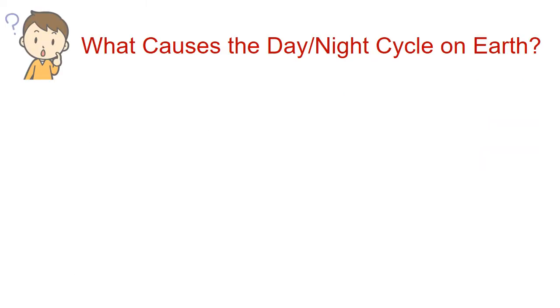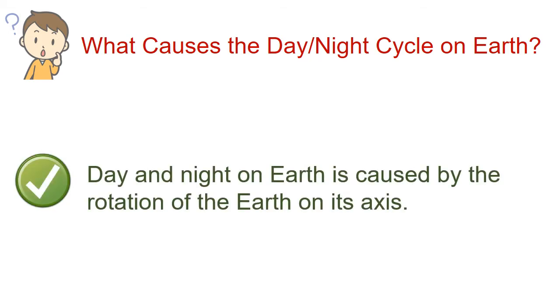Now I am sure you have one question in your mind: what causes the day and night on Earth and how does it happen? The answer is simple. Day and night on Earth is caused by the rotation of the Earth on its axis.